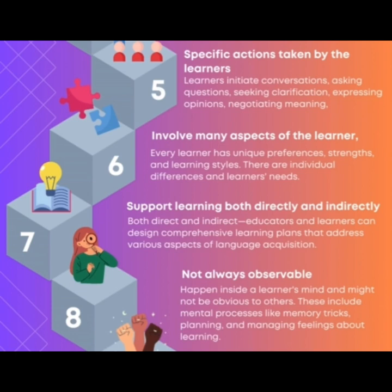Point seven is supporting learning both directly and indirectly. Direct teaching is when teachers give lessons or instructions straight to learners, helping them learn specific topics. Creating a learning environment means making a place where learners can explore, ask questions, and learn on their own, not just from direct teaching. By combining direct teaching with a supportive environment, learning becomes more well-rounded, covering all parts of a subject.